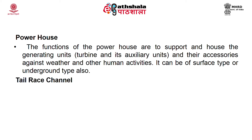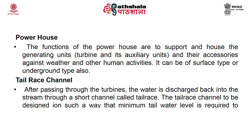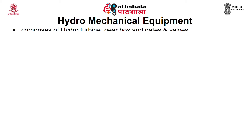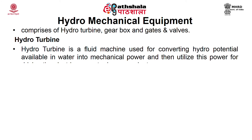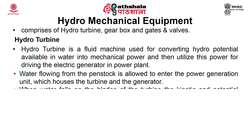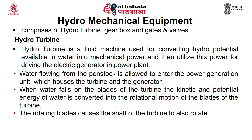After passing through the turbine, water is discharged back into the stream through the tailrace channel, designed to maintain minimum tail water level for safe suction head. The hydro-mechanical equipment comprises the hydro-turbine, gearbox, gates, and valves. A hydro-turbine converts hydro potential in water into mechanical power to drive the electric generator. When water falls on the turbine blades, its kinetic and potential energy is converted into rotational motion, causing the turbine shaft to rotate.